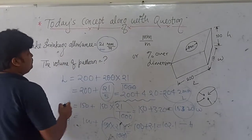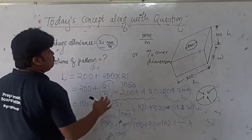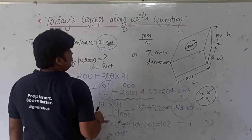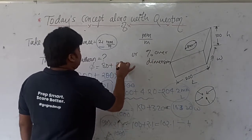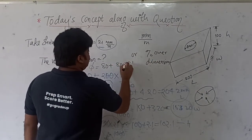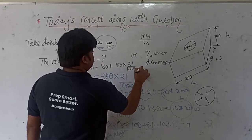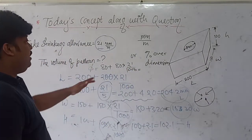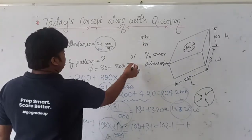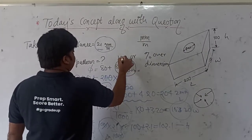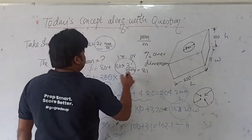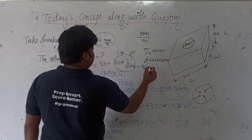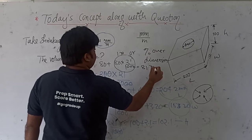For the bore: it is also going to shrink, not expand. So bore diameter = 80 plus (80 × 21 / 1000), which equals approximately 1.68, so roughly 1.70. The final diameter of the bore after provision of shrinkage allowance will be approximately 81.70 mm.